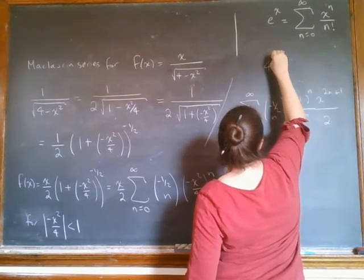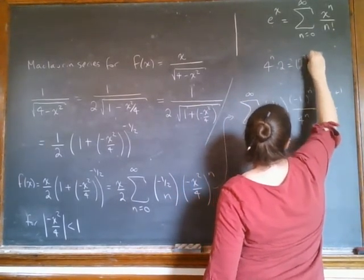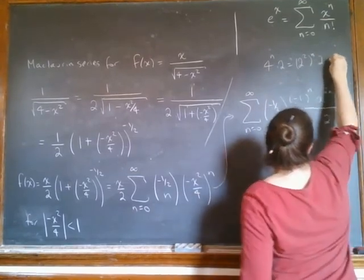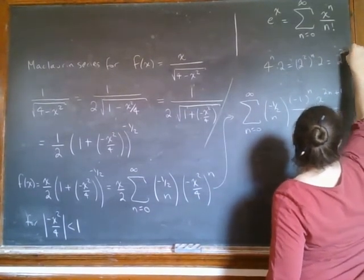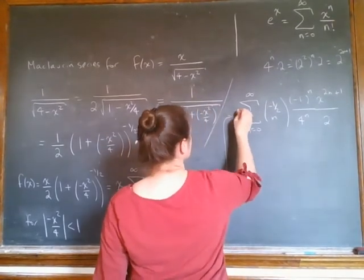Do you know what I'm saying? 4 to the n times 2 is 2 to the 2 to the n times 2. So this is 2 to the 2n plus 1. I can write it that way too. So let's just do that.